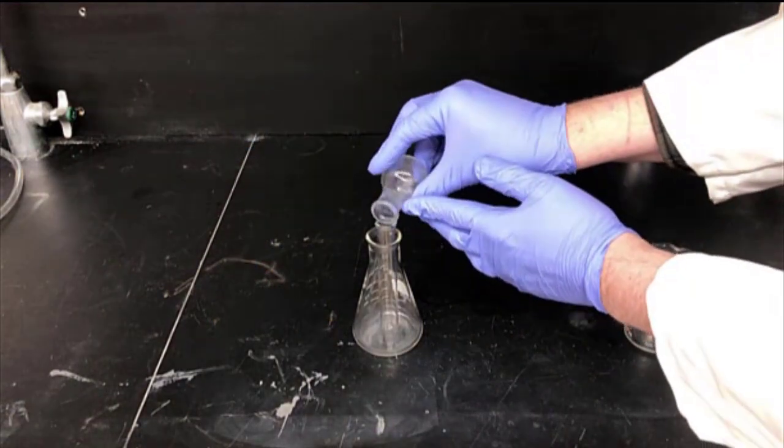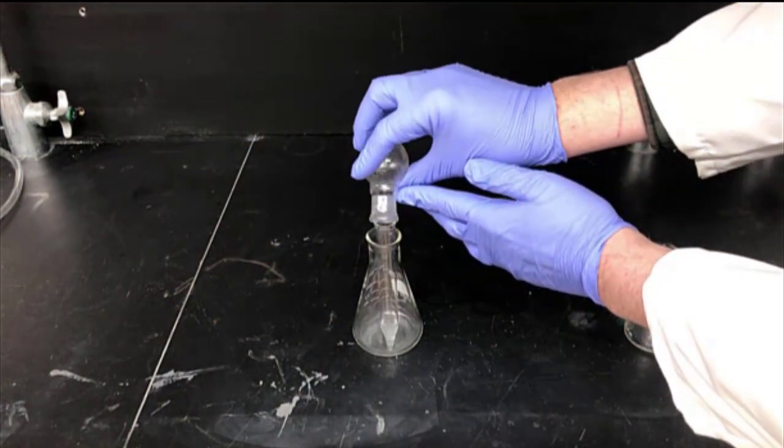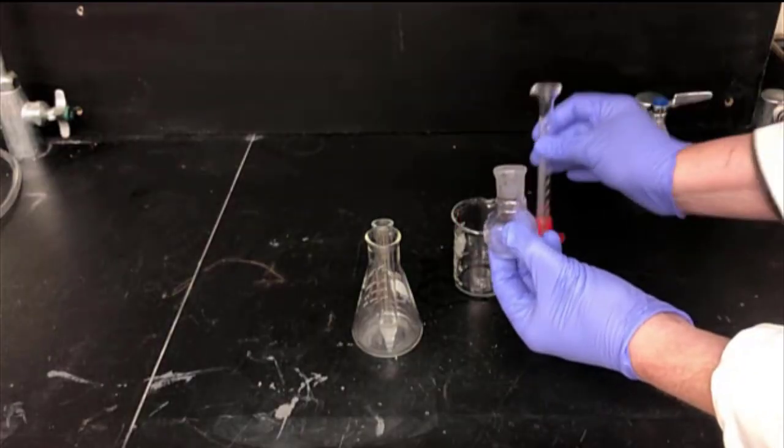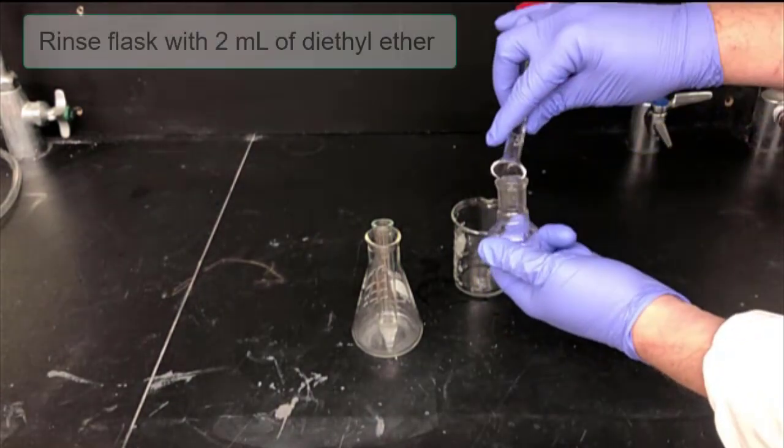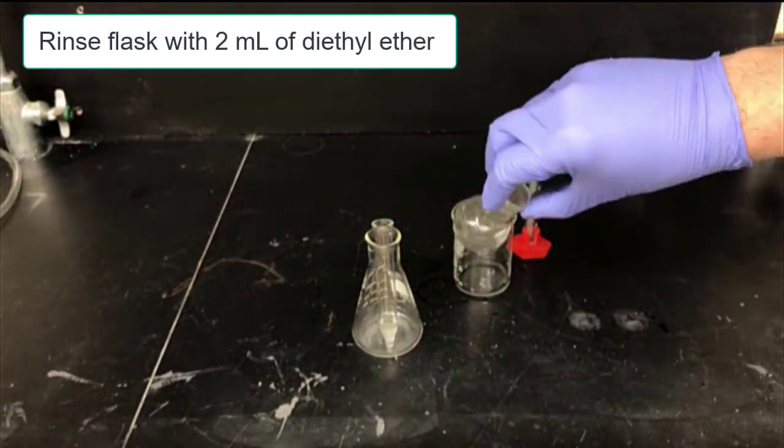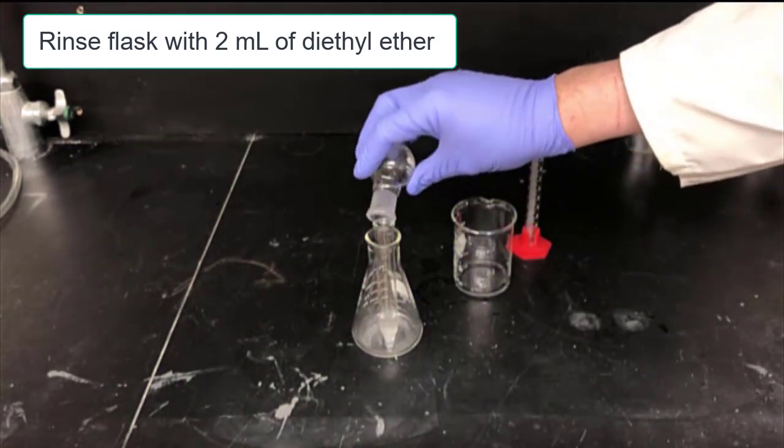In the next step, transfer the reaction mixture into a point-bottom test tube. These are sometimes called centrifuge tubes. Then rinse the round-bottom flask with two milliliters of diethyl ether and add the diethyl ether to the point-bottom test tube.